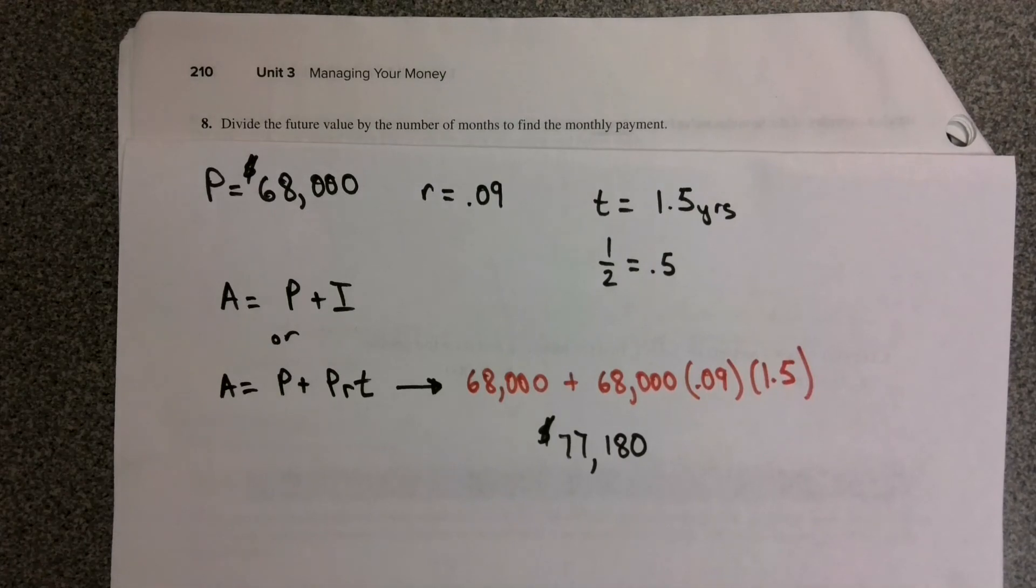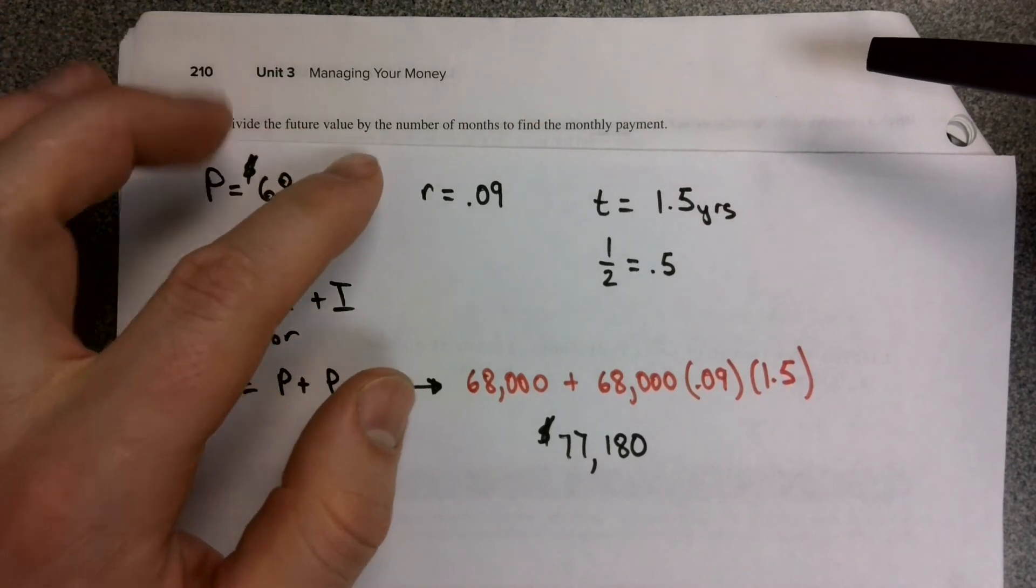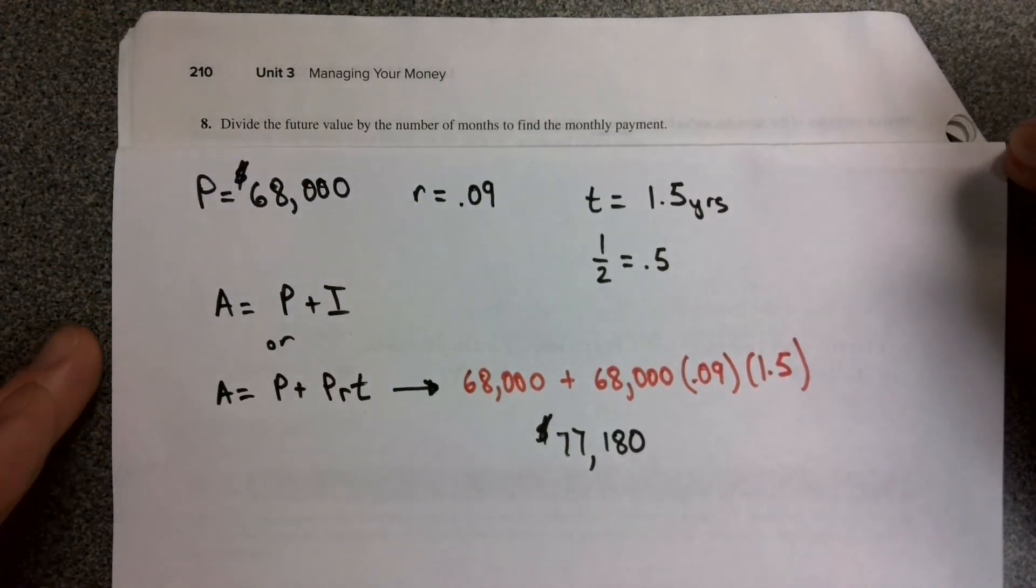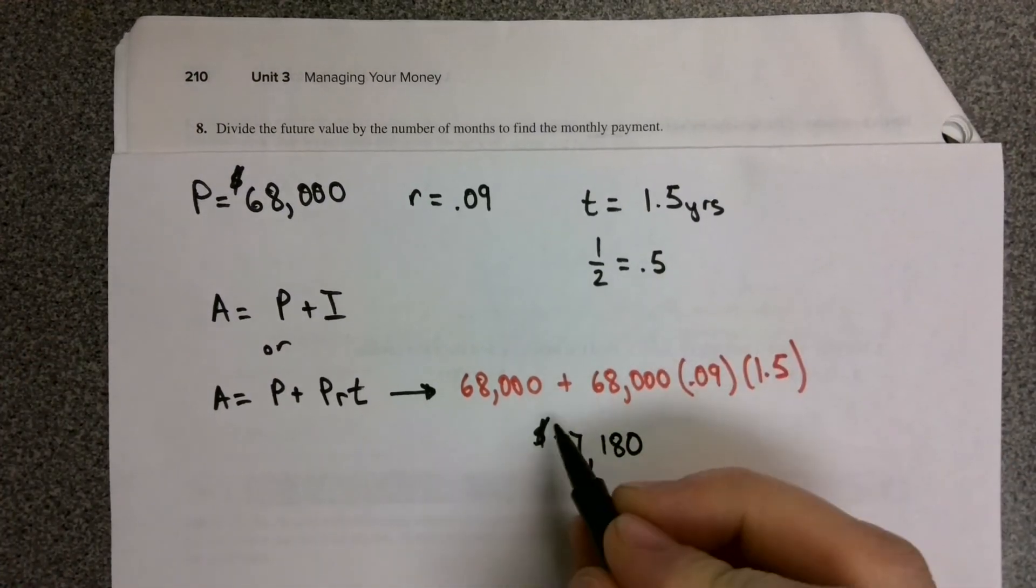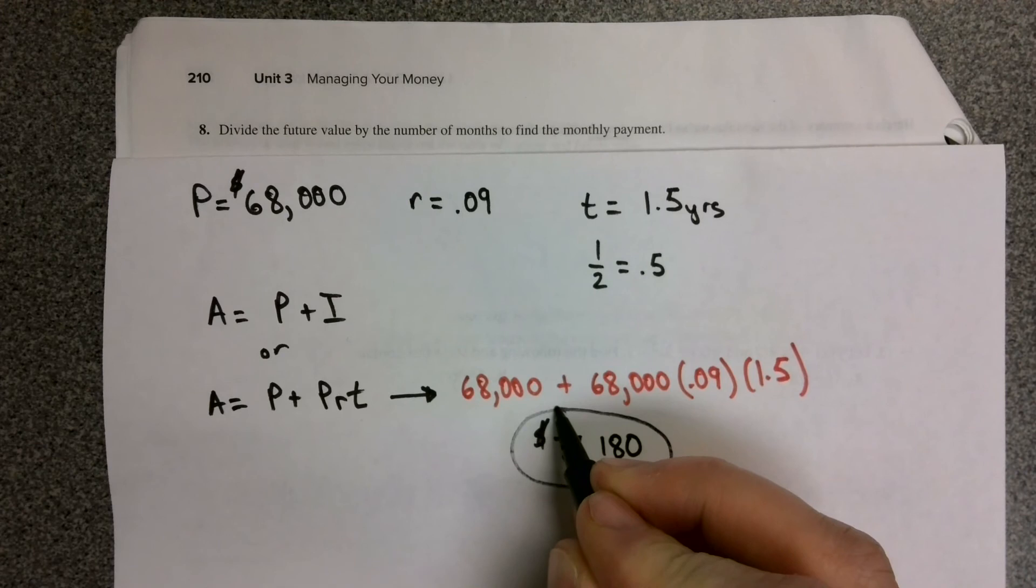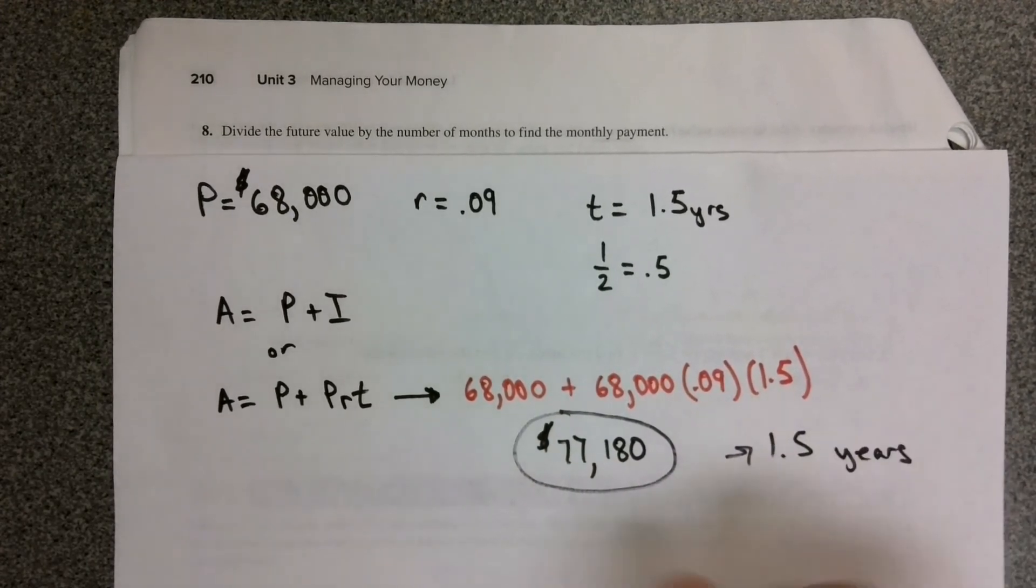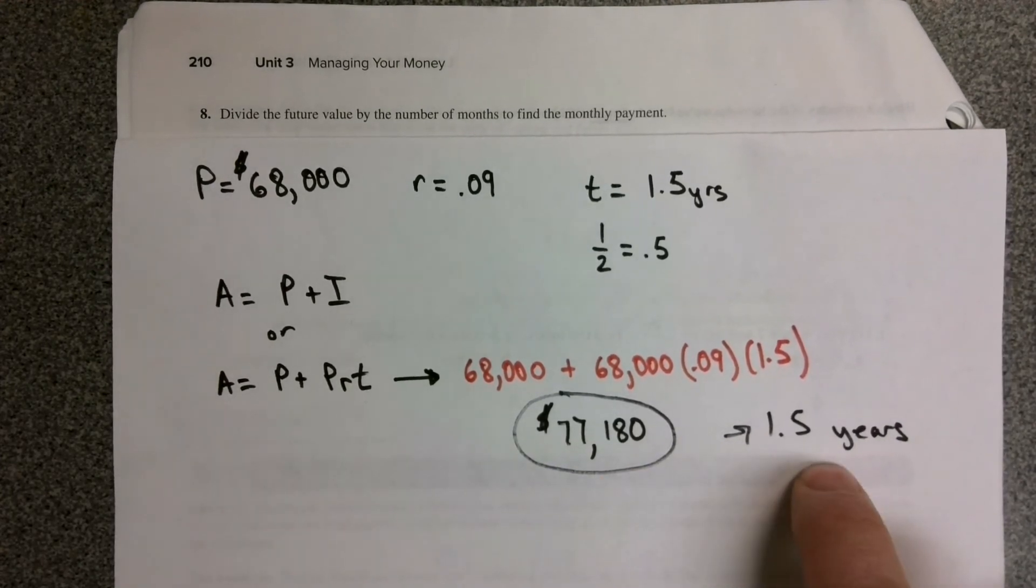Question eight gives us an instruction: divide the future value by the number of months to find the monthly payment. So what we're finding here is how much we're going to have to pay per month for 1.5 years in order to pay off this total amount at the end of this time period.